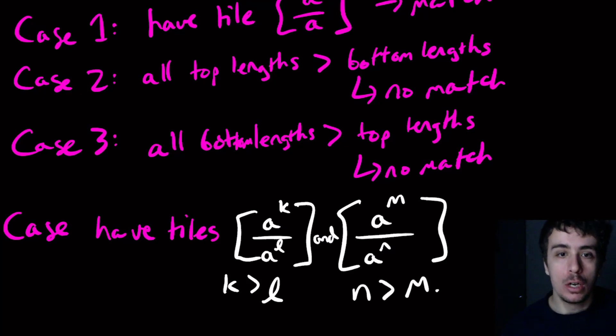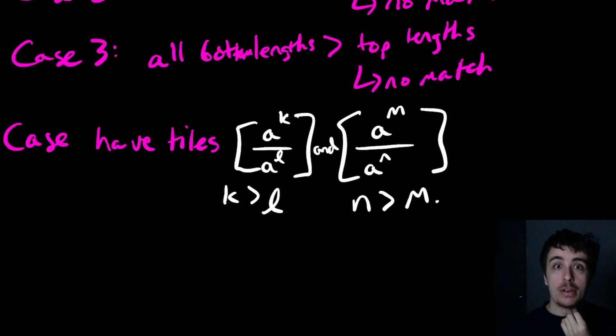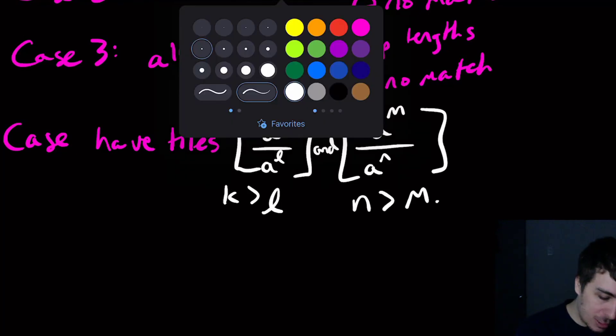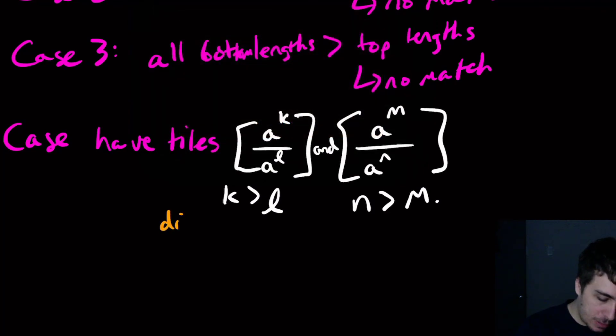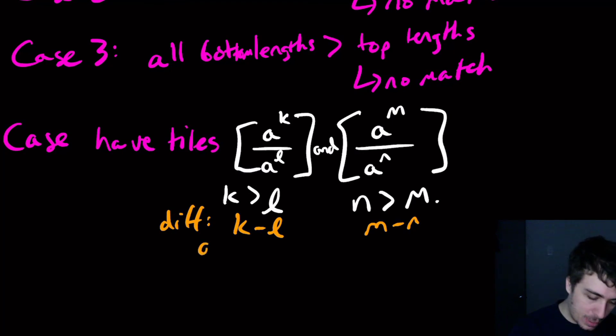So here we have the length of the bottom is bigger than the top. Well, I claim that there is a match. So the idea is look at the difference. So the difference for the top compared to the bottom is K minus L and for here is M minus N.